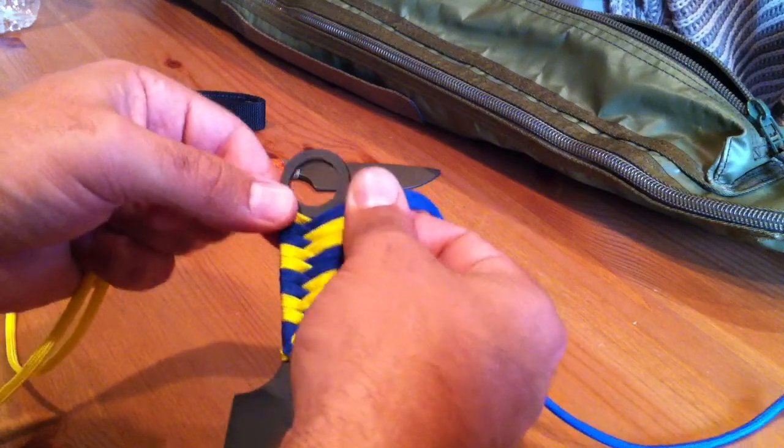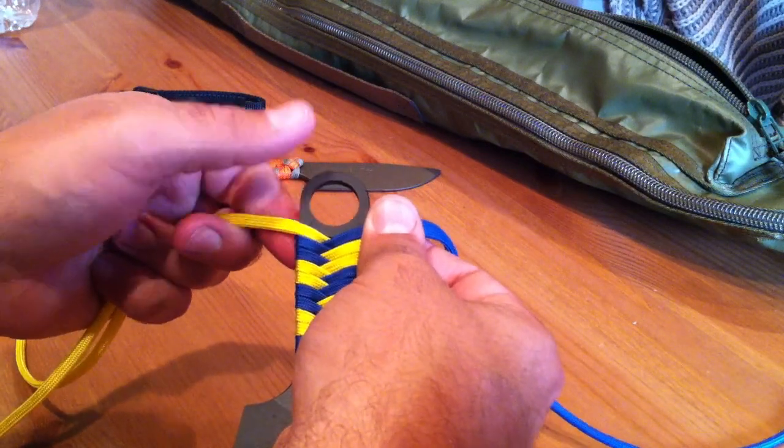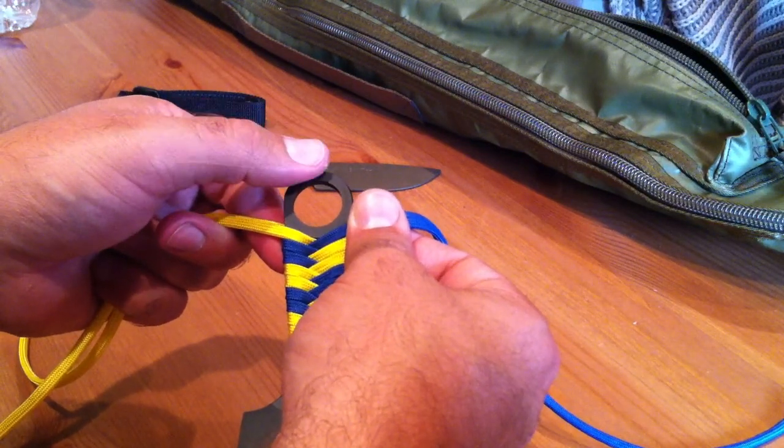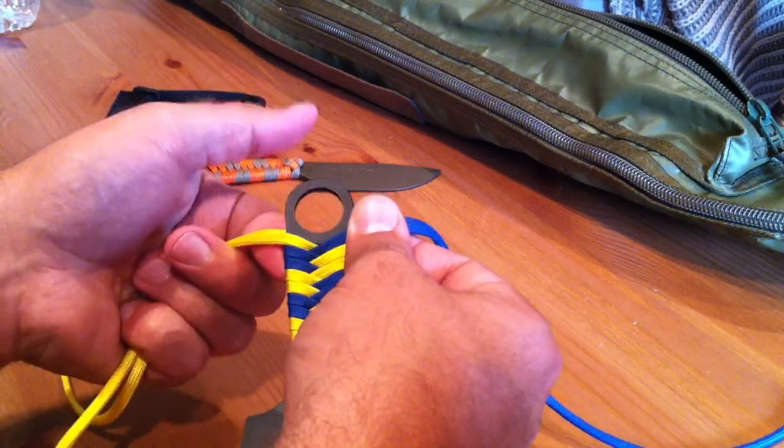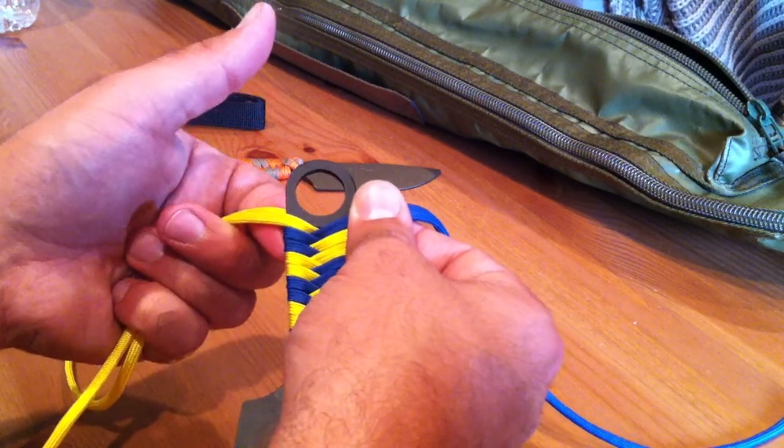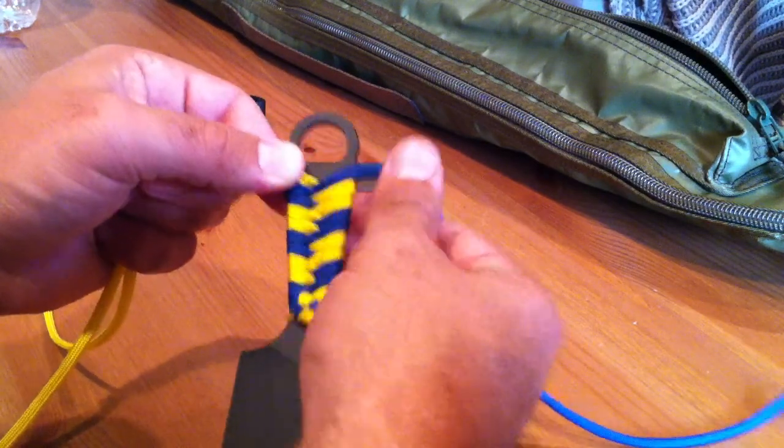Now, the reason we do that is because when we're finished, you're going to have two of these pieces of cord coming out the bottom side and two of them coming out the top side. That's going to be very important to the way we finish it. So once you get to that point,